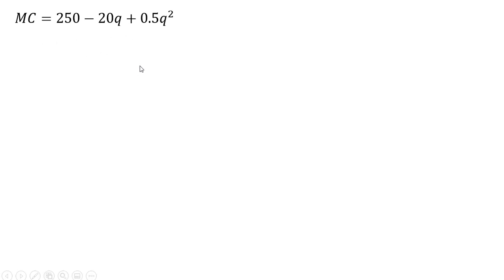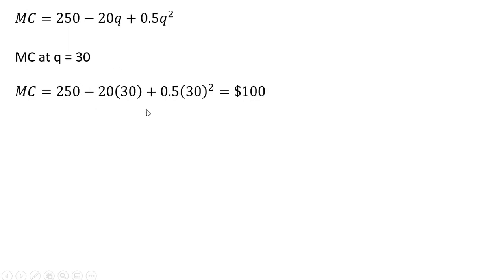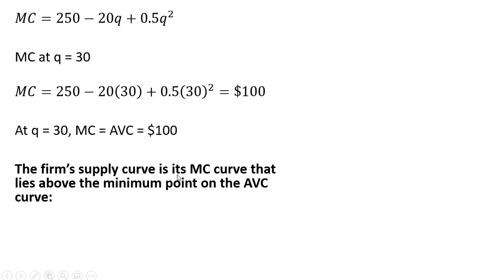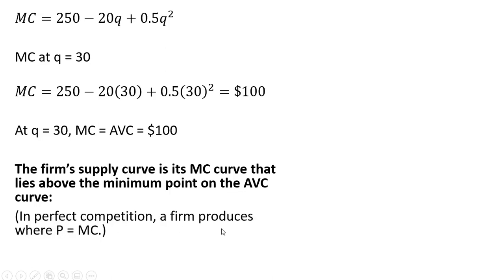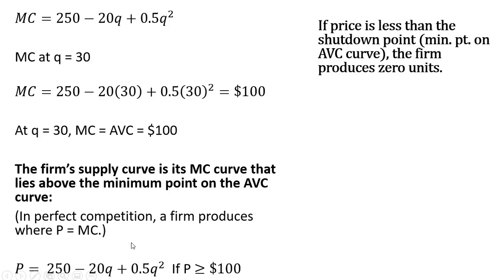When q equals 30, marginal cost also equals $100 — so at q equals 30, average variable cost equals marginal cost. The firm's supply curve is its marginal cost curve that lies above the minimum point on the average variable cost curve. In perfect competition, a firm produces where price equals marginal cost, so setting MC equal to p gives the firm's supply curve. If price is greater than or equal to $100, the firm produces a positive output. If price is less than $100 — the shutdown point — the firm produces zero units of output.